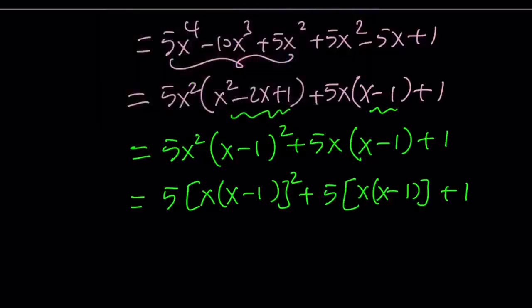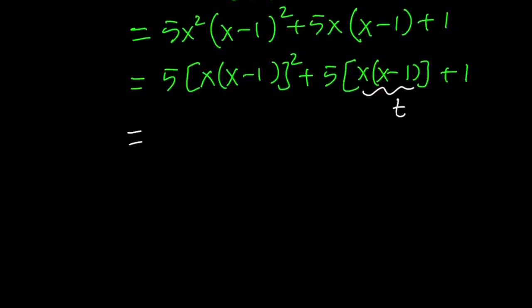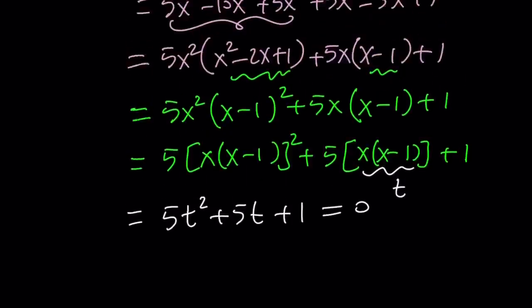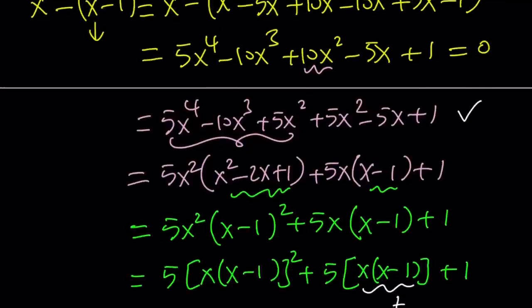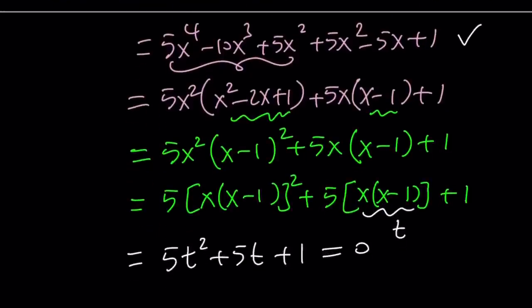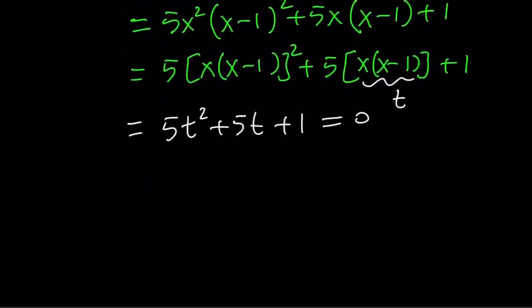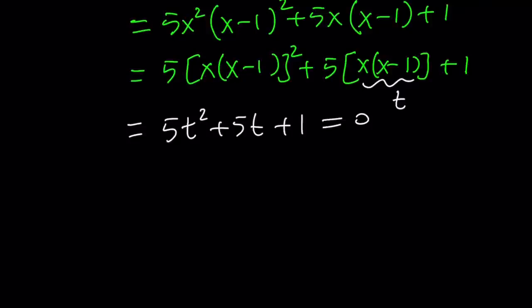This can be written as x minus one squared. And now notice that x times x minus one repeats itself with the quadratic term. So we can write this as 5 times x times x times x minus one squared plus 5 times x times x minus one. We're going to replace that with t. From here we get 5t squared plus 5t plus one equals zero. This is a lot easier than solving the quartic because we can transform it into a quadratic.